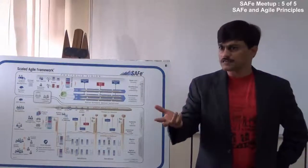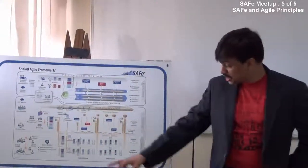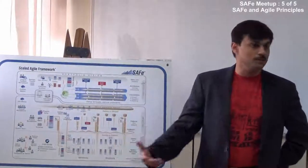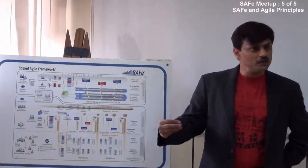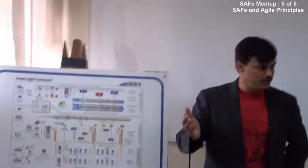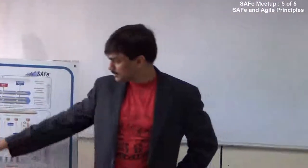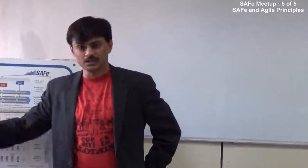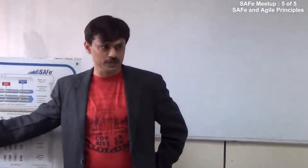So scrum of scrum is a coordination meeting where people from each team will come and share about their progress, their issues and all. Scrum of scrum here plays a role of some level of meta scrum also, so where we can also discuss the requirement related directions. And again the product management, release management has a dedicated resource for that.